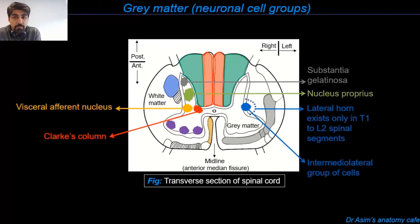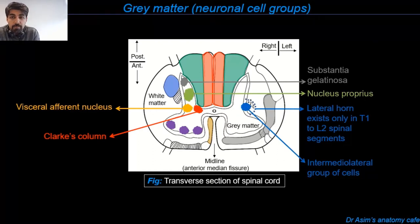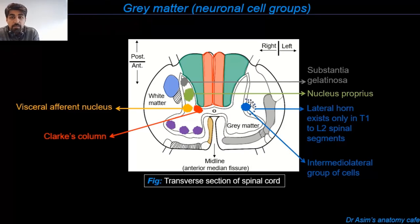After the posterior horn, we have the lateral gray horn of the spinal cord, which only extends from T1 to L2 segments — the first thoracic to the second lumbar segment. This means the lateral horn is not present in the cervical or lower lumbar regions. Inside the lateral horn we find an intermediolateral group of cells that give rise to preganglionic sympathetic nerve fibers. A similar group in the S2 to S4 segments gives rise to preganglionic parasympathetic autonomic motor neurons.